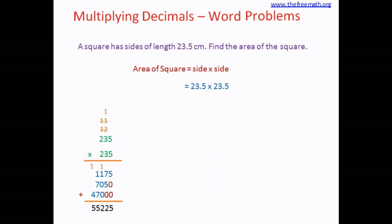5 plus 0 plus 0 equals 5. 7 plus 5 equals 12, so we write down 2, 1 is carried over. 1 plus 1 plus 1 equals 2. 1 plus 7 plus 7 equals 15, we write down 5, 1 is carried over. 1 plus 4 equals 5. Now this was a big multiplication.